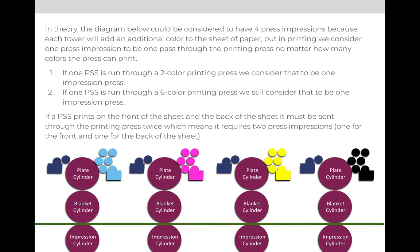The same applies to any other printing press. So like a six-color printing press, in theory six impressions occur for each of the six colors that it's printing. But when we talk about that six-color press, we expect it to print six colors, so we would say it is one impression or one pass through the printing press.